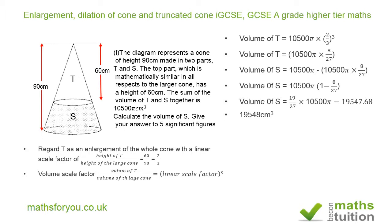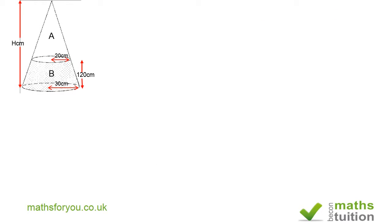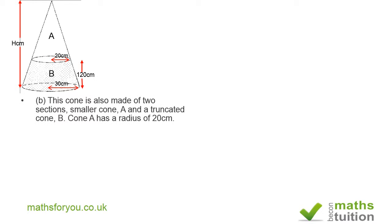For the next problem, this cone is also made of two sections: smaller cone A and truncated cone B. Cone A has a radius of 20 centimeters.